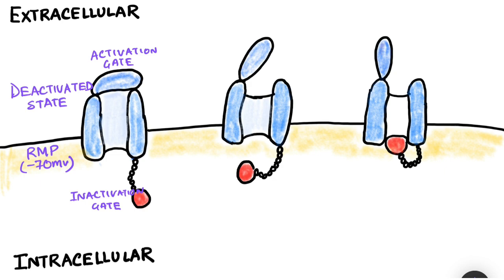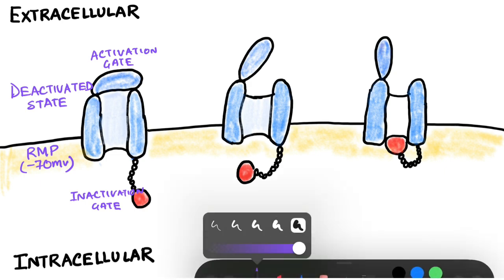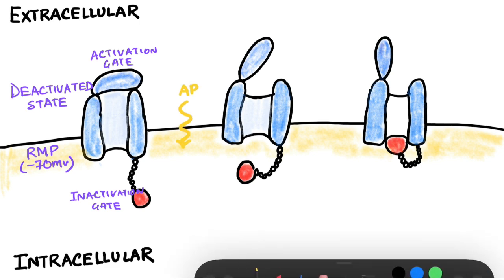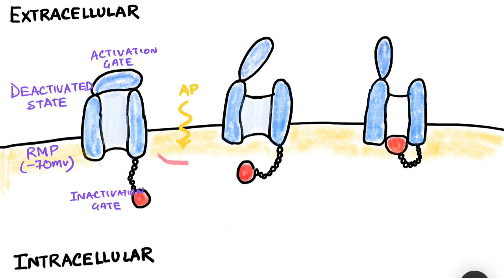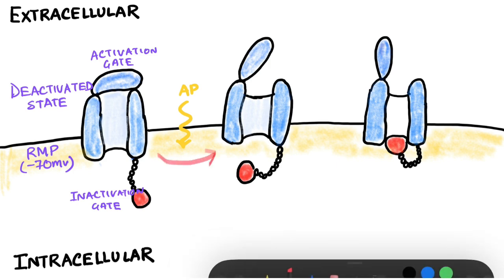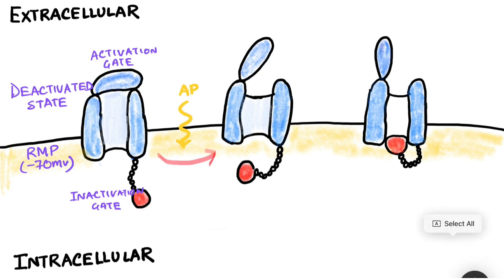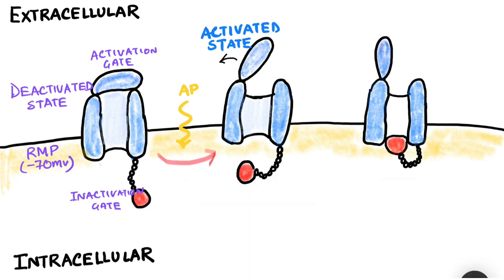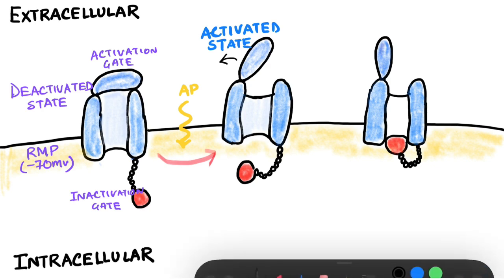From this state, when the cell gets some kind of stimulus — for example, there can be some sort of action potential coming into the cell — the deactivated state goes into something known as the activated state, in which the activation gate opens and the inactivation gate remains open as it is. This way, as both gates are open, sodium can trickle into the cell.